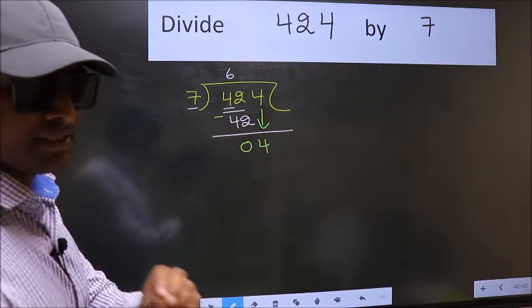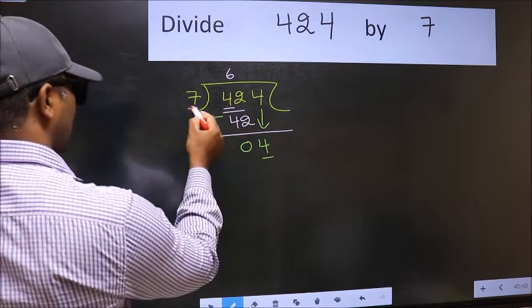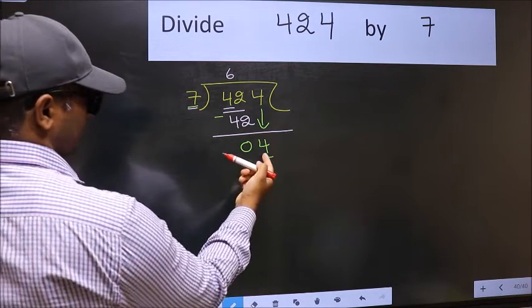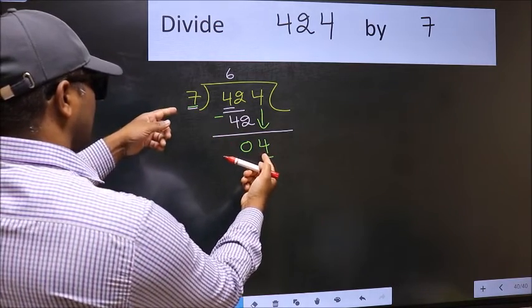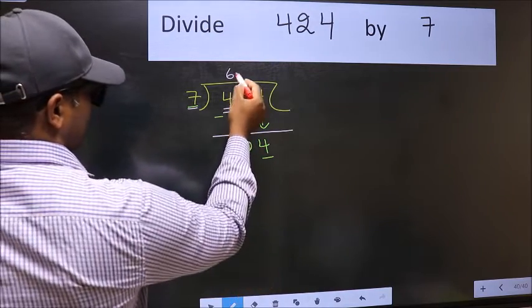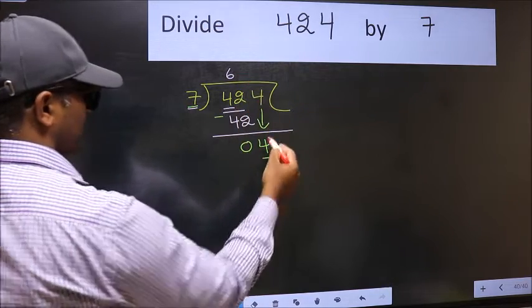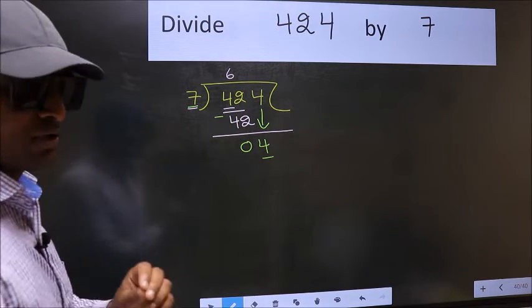And the mistake is this: here we have 4 and here 7. 4 is smaller than 7. So what many do is they directly put the dot and take 0, which is wrong.